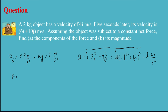Now I have the acceleration and I can find the force. Force equals m times a. My mass is 2 kilograms and my acceleration magnitude is 2 meters per second squared, so the total force is 4 newtons.